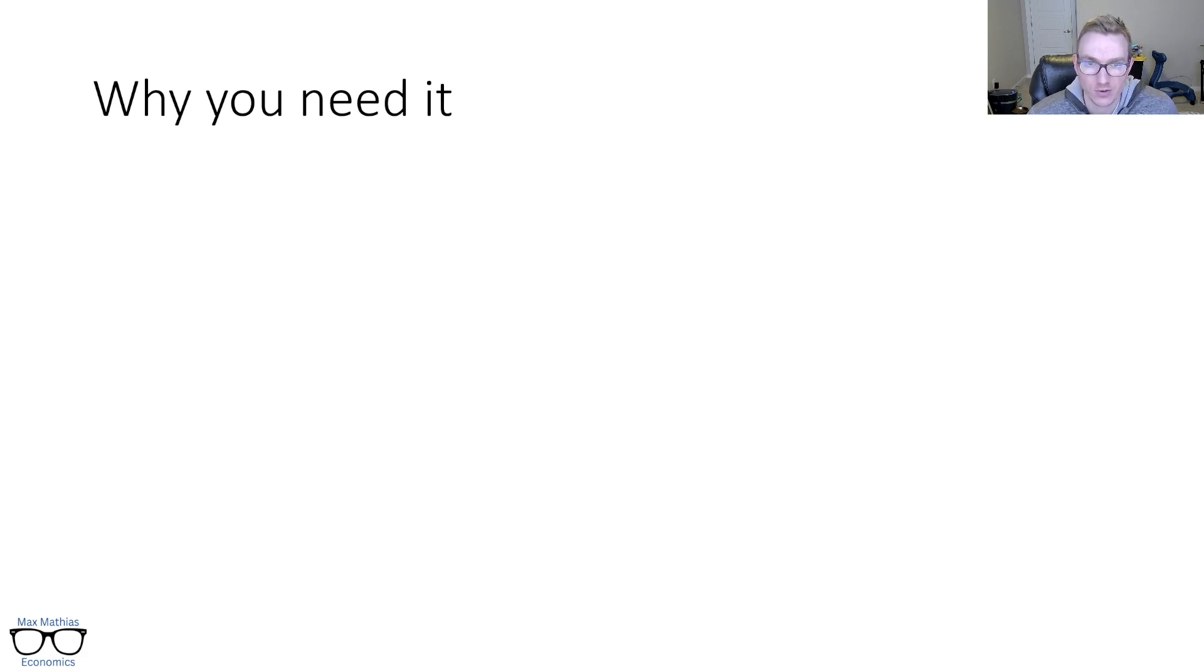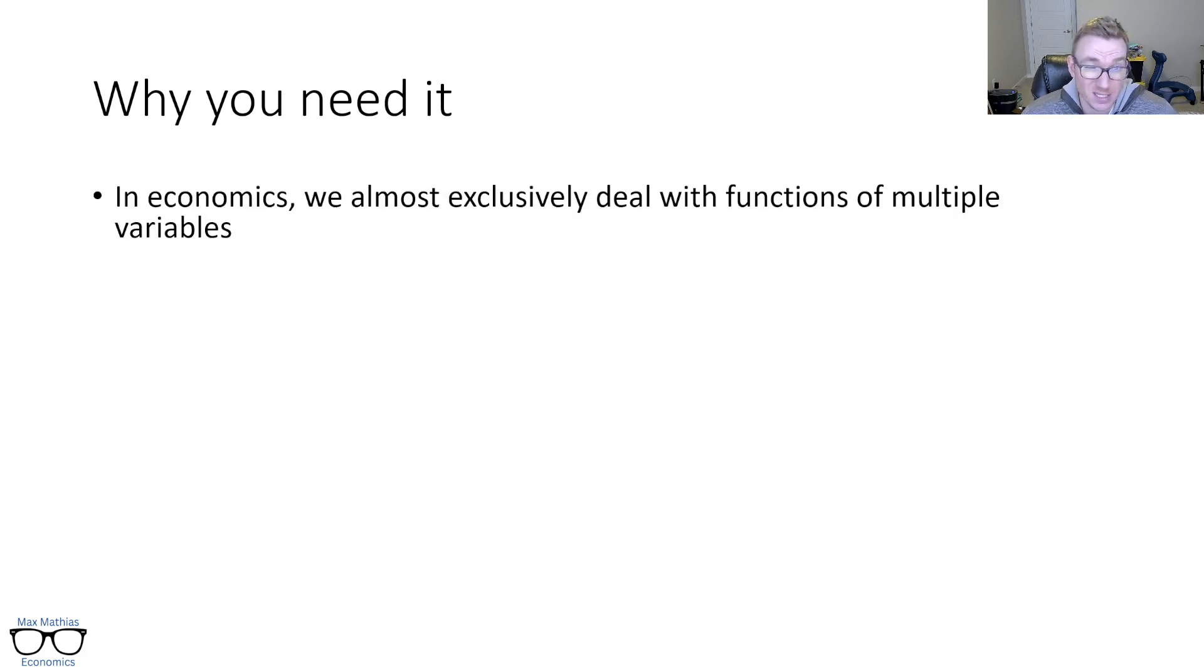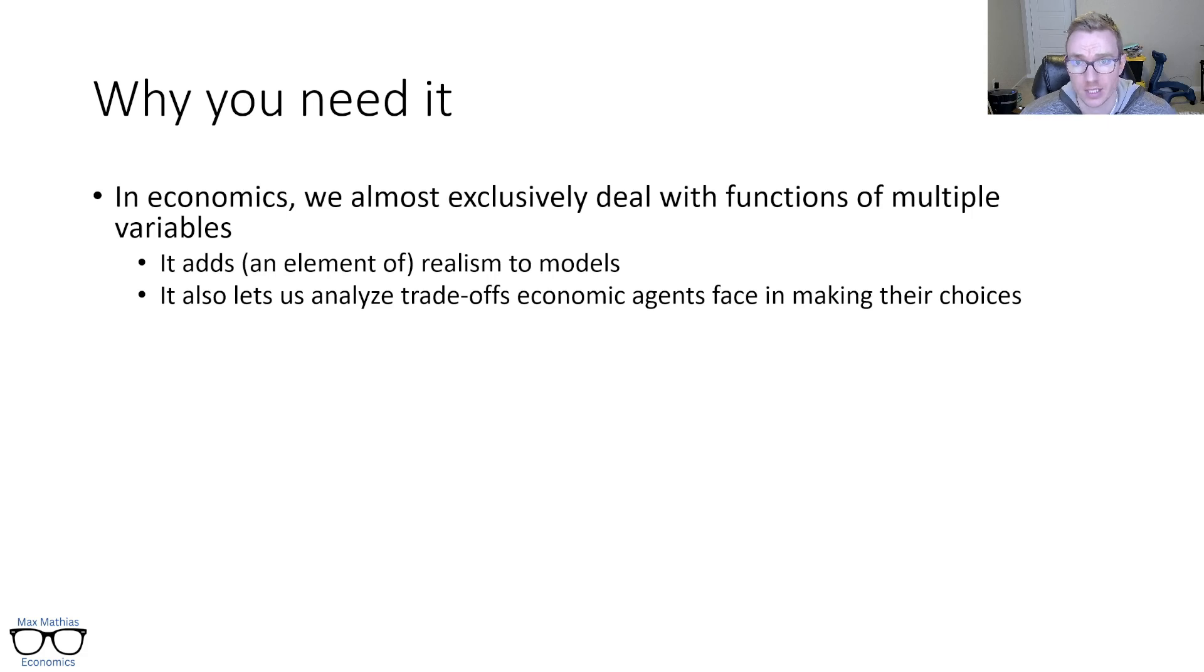So why do you need multivariate calculus for Econ? We're basically always going to be dealing with functions of multiple variables. Why is that? Well, it adds an element of realism to models. Obviously, models are just abstractions of reality, but adding more variables lets us add a little bit more realism and we can make predictions. It also lets us analyze trade-offs that economic agents face in making their choices. If they're only getting to choose one thing to change, that's not very interesting, but if there are multiple things that they can be choosing, well now there's trade-offs, which is kind of the core of economics.